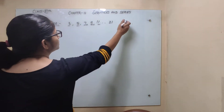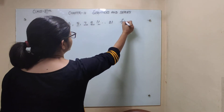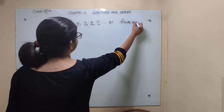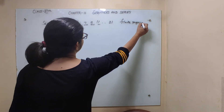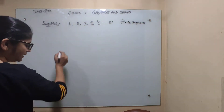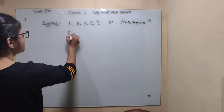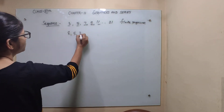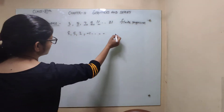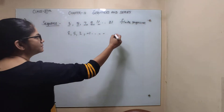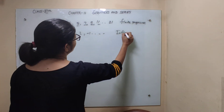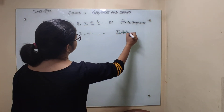Since you know the last term here, this is called a Finite Sequence. Now I am writing another sequence: 8, 5, 2, -1, and so on. Here you don't know the last term, so it is an Infinite Sequence.